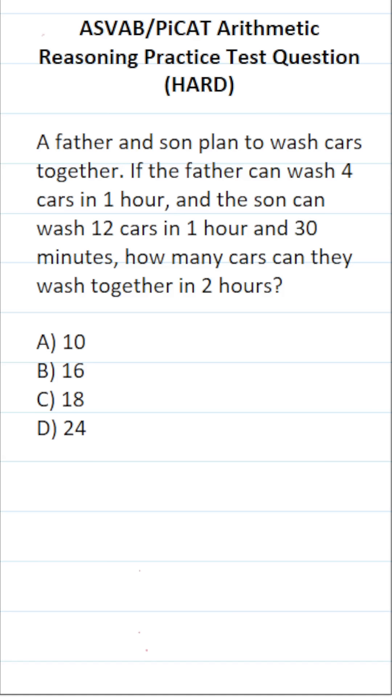So let's think about this one this way. Let's say the father and son are each working on their own car at the same time. The father can wash four cars in one hour. That means he can wash eight cars in two hours.